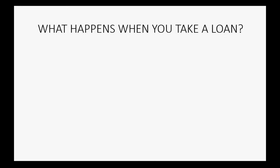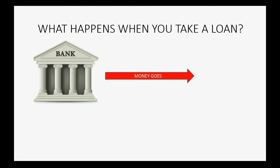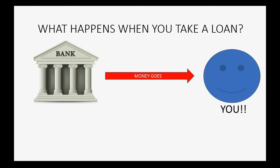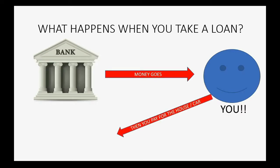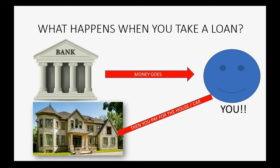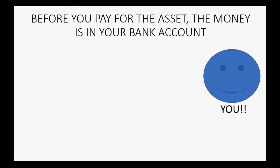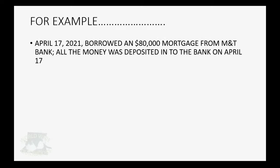So what happens when you take an installment loan? First, the money goes from the institution that you're borrowing from to you, and it stays in your bank account until the day that you pay for the house or the car. You should be aware that before you pay for the asset that you borrowed the money for, the money is in your bank account. For example, let's imagine on April 17th, 2021, you borrowed an $80,000 mortgage from M&T Bank. All the money was deposited into your M&T Bank account on April 17th, and you will pay for the house later.